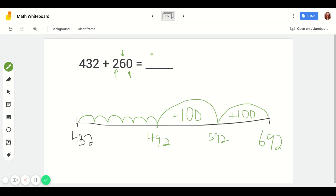So now you have your answer. 432 plus 260 equals 692. So that's how you can use the number line to do that.